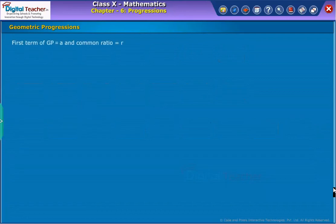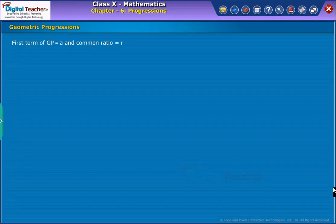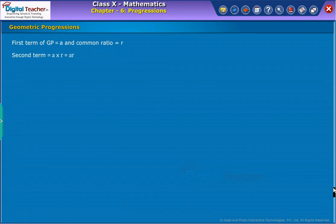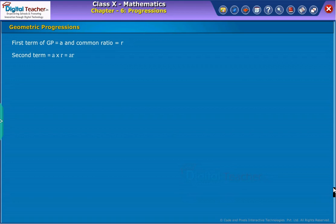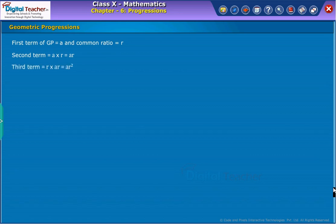Now, let us consider that the first term of GP as A and common ratio R. Then to get the second term according to the rule of geometric progression, multiply the first term by the common ratio R. Then we obtain second term as A into R. Similarly, to obtain third term, multiply R with second term AR, then we obtain as AR square.